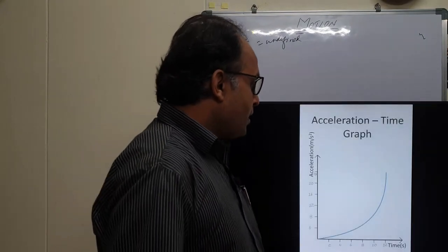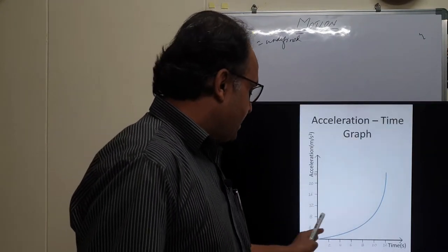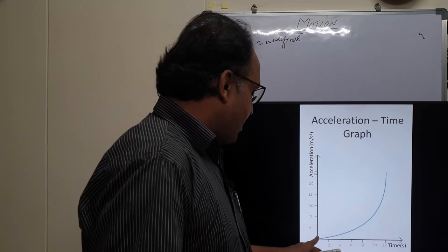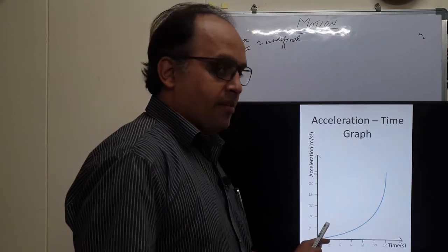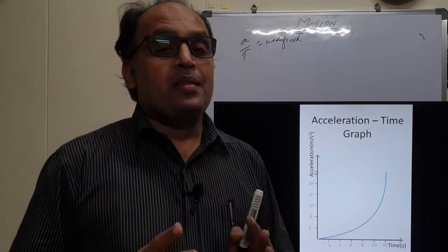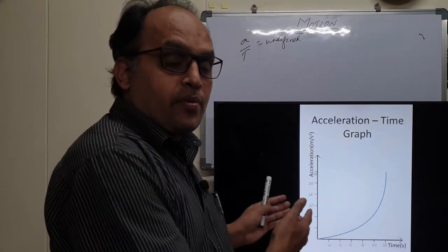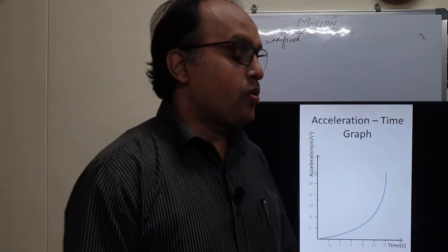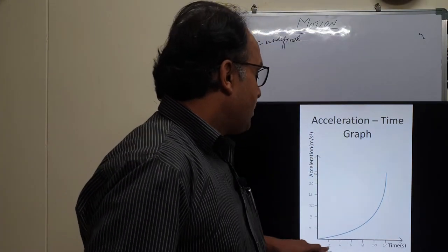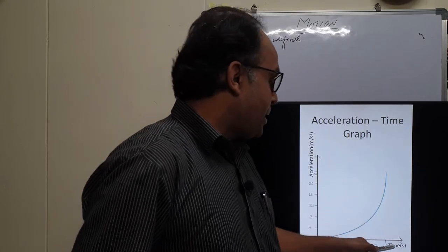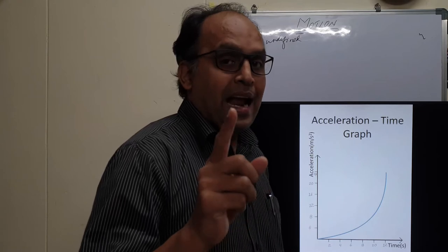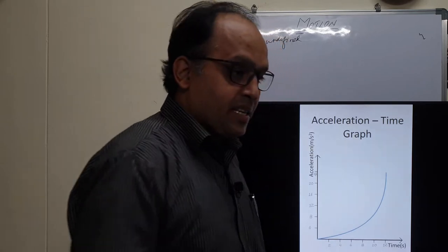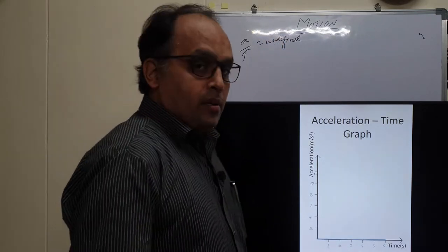In the next graph, the acceleration is non-uniform: after 2 seconds it is around 2 meters per second squared, and after 4 seconds it is also around 2. The acceleration is non-uniform, and therefore the velocity is also non-uniform. When the graph is a curve passing through the origin in the acceleration-time graph, both the body's acceleration and velocity are non-uniform.